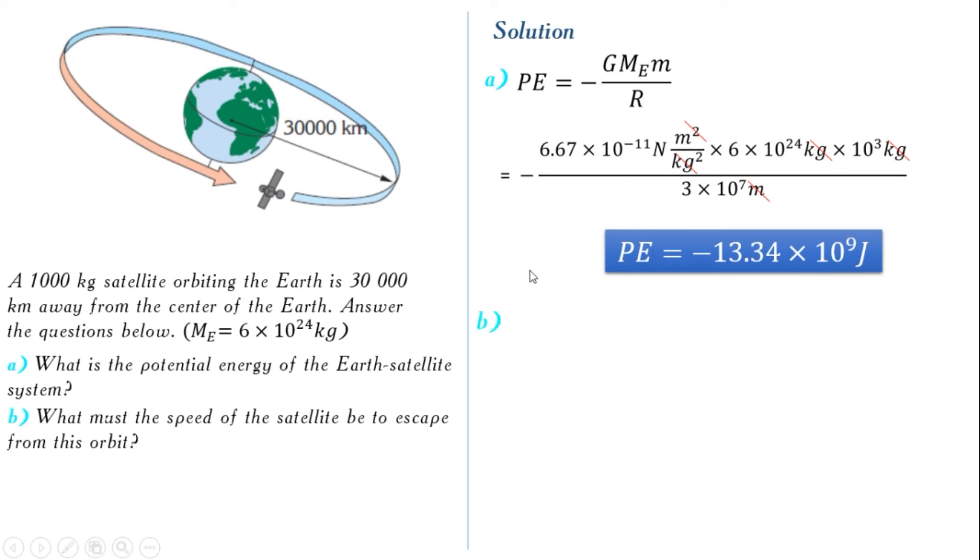For question B, we write the formula for escape speed. And again, we put the given numbers in the formula. And now we get the equation 2 times gravitational constant times mass of earth over the distance.